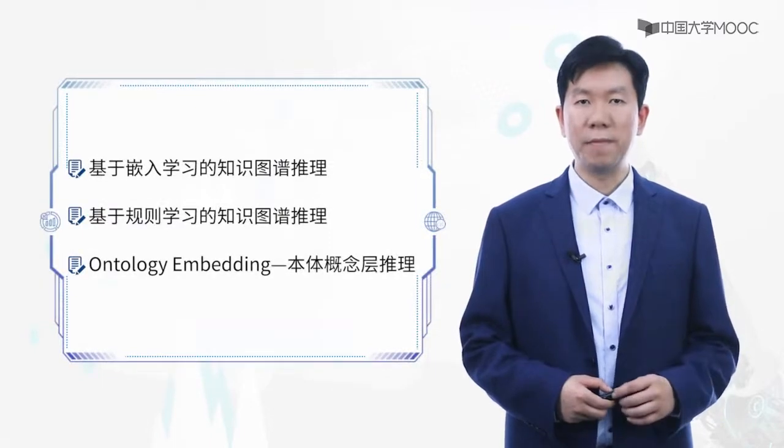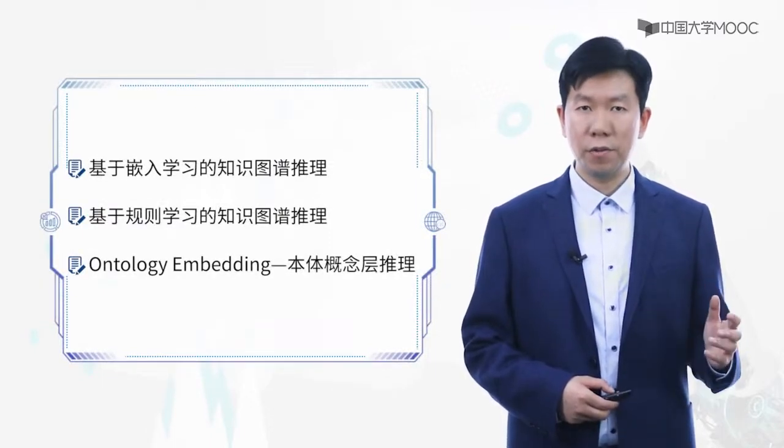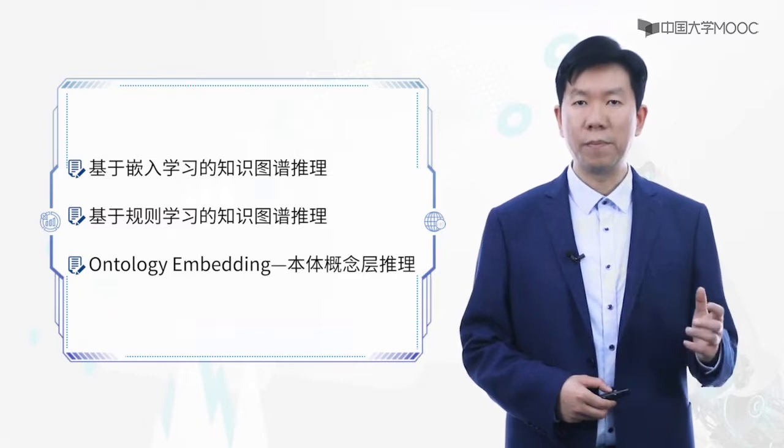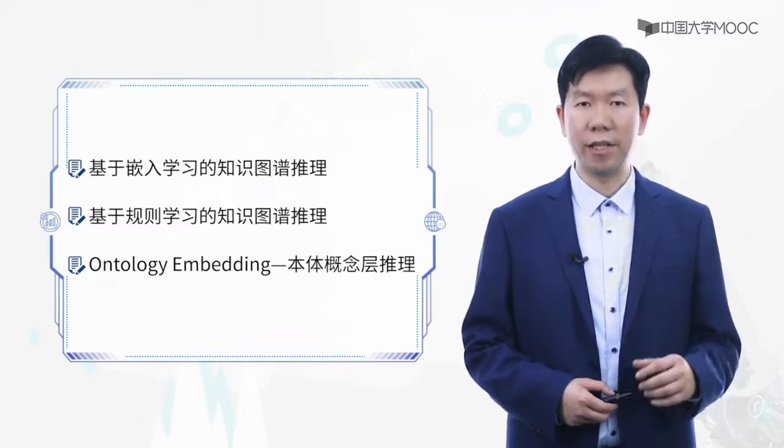大家好，在这一小节中，我们开始讲解利用机器学习方法，特别是表示学习方法，实现知识图谱推理的模型。我们会首先介绍较为简单的基于知识图谱嵌入的推理方法，也就是Knowledge Graph Embedding。随后进一步，我们关注怎样利用规则学习，实现更为复杂的知识图谱推理。我们还将介绍一类称为Ontology Embedding的方法，侧重于利用表示学习方法来捕获更为复杂的本体概念层的推理逻辑。